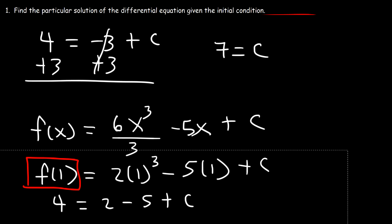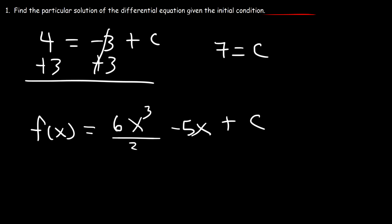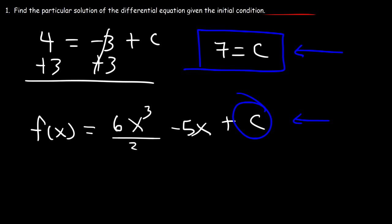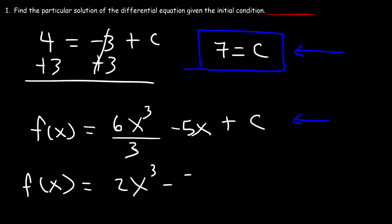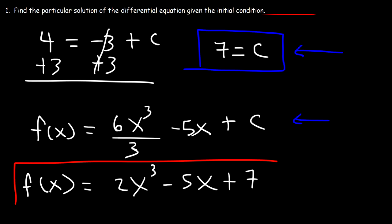Now that we have the value of c, we can write the final answer. You just need to replace c with 7. So f(x) is going to be 6 divided by 3, which is 2x cubed, minus 5x plus 7. So this is the solution to the differential equation.